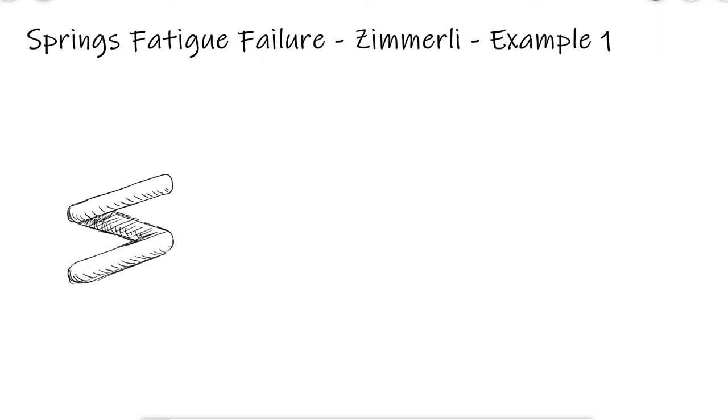A compression spring is needed to fit over a 0.5 inch diameter rod. To allow for some clearance, the inside diameter of the spring is to be 0.6 inches.